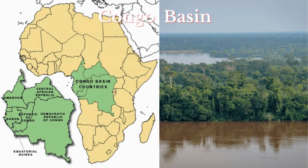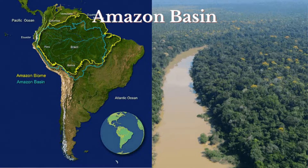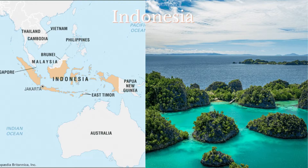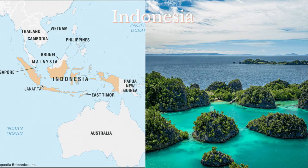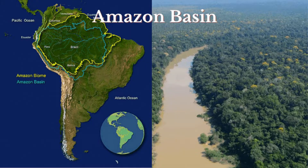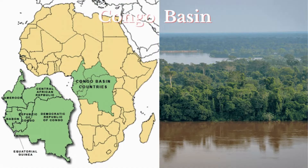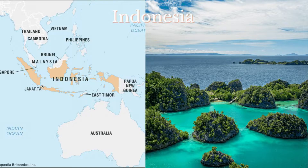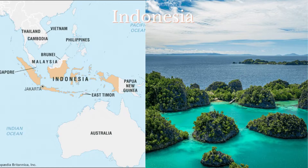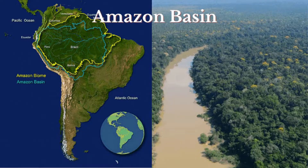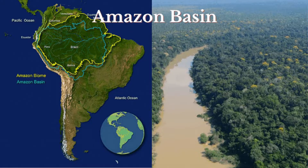Equatorial climate is experienced in places such as the Amazon Basin in South America, the Congo or Zaire Basin in Africa, as well as the East Indies in places such as Singapore and Indonesia. In the Caribbean, it is experienced in southern territories close to the equator such as Guiana and Suriname.